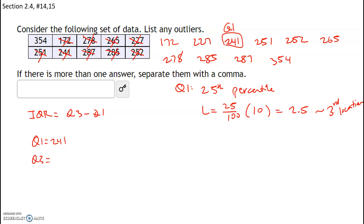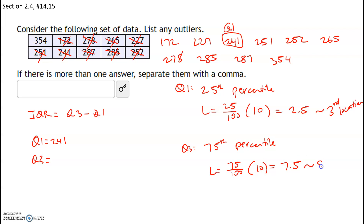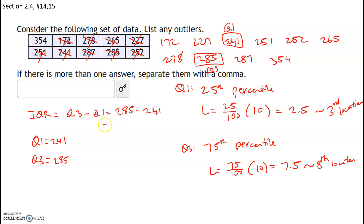For Q3 (the 75th percentile), the locator index is 75/100 × 10 = 7.5. Since this is a decimal, we round up to the 8th location. Counting to position 8 gives us 285, so Q3 = 285. The IQR is Q3 minus Q1: 285 minus 241 equals 44.